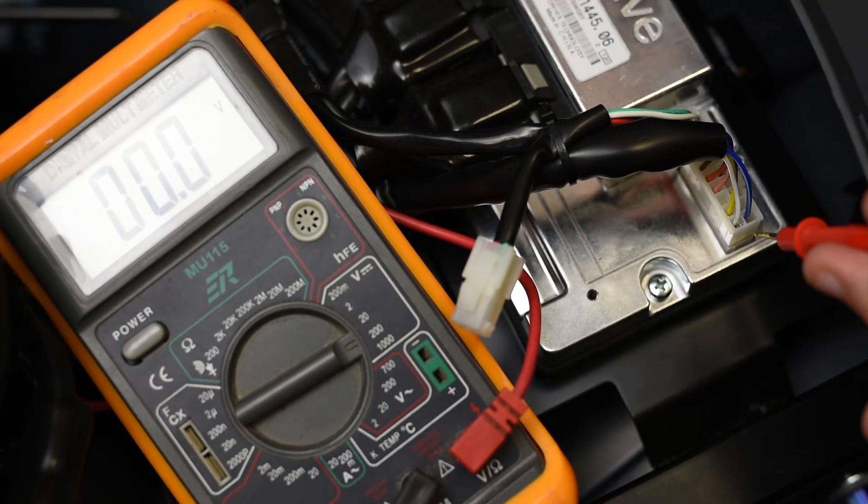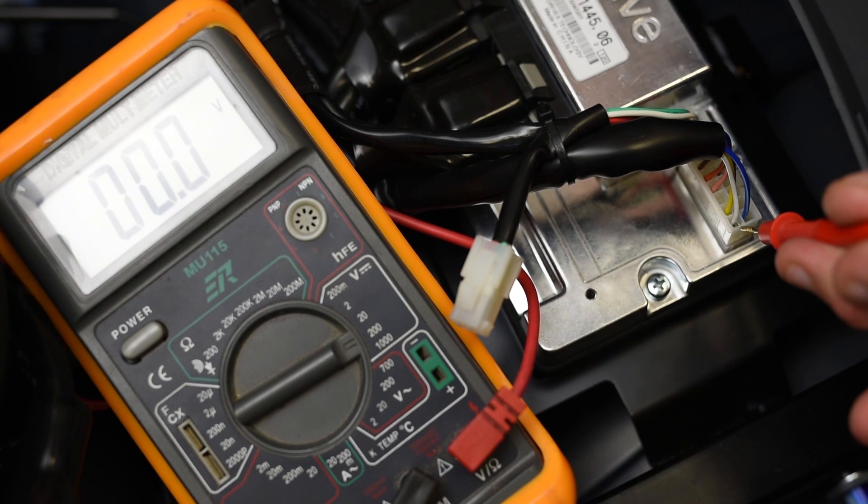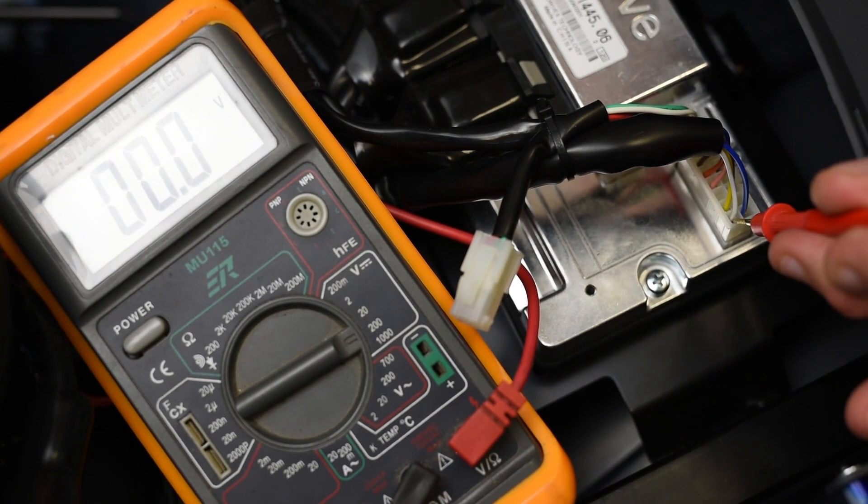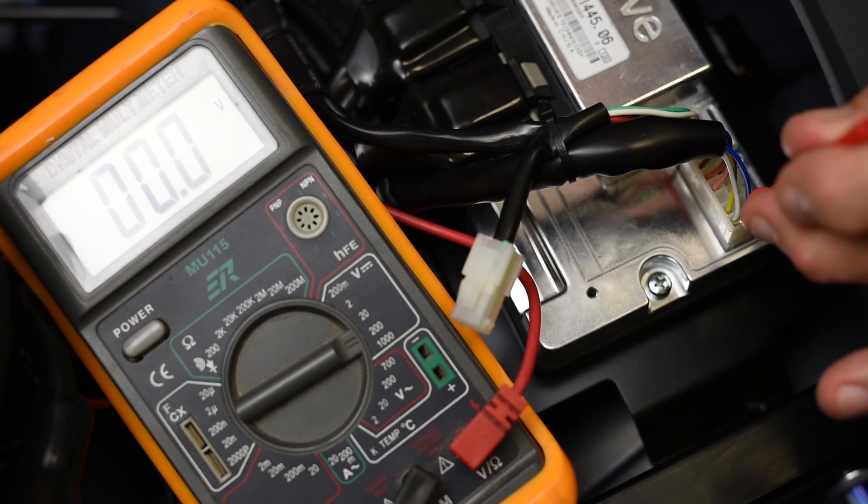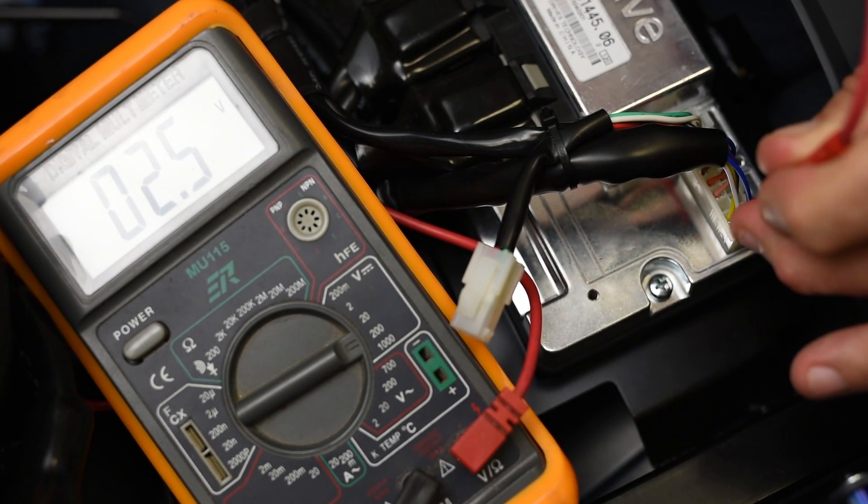Now we want to check the center of the controller, which would be this white wire, and we want to see about two and a half volts to it. And that's what we have.